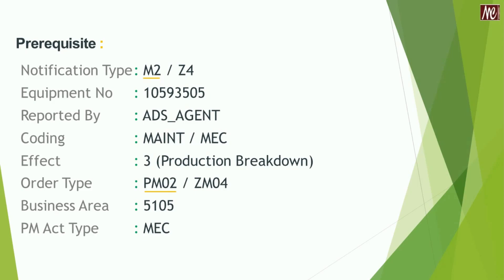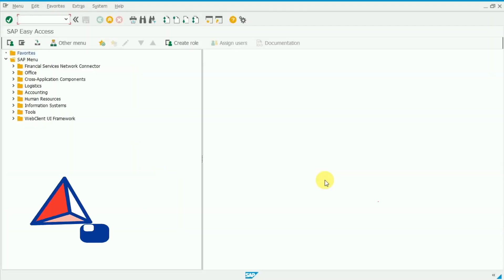Before going ahead we must know the prerequisites for executing the process in the SAP S4HANA 2020 system. The standard notification type SAP offers is M2, however we are preferring Z for notification. The equipment number is already mentioned, reported type is mentioned, and coding is also mentioned. Effect 3 is being used here. The standard order type suggested by SAP for breakdown maintenance is PM02, however we will use ZM04. Business area is 5105 and PM activity type is MEC. Now we are switching the screen to the S4HANA 2020 system.